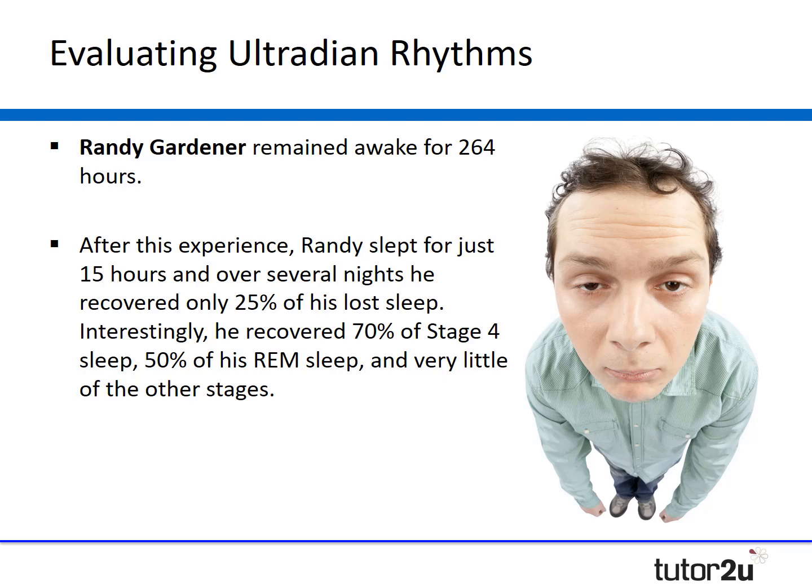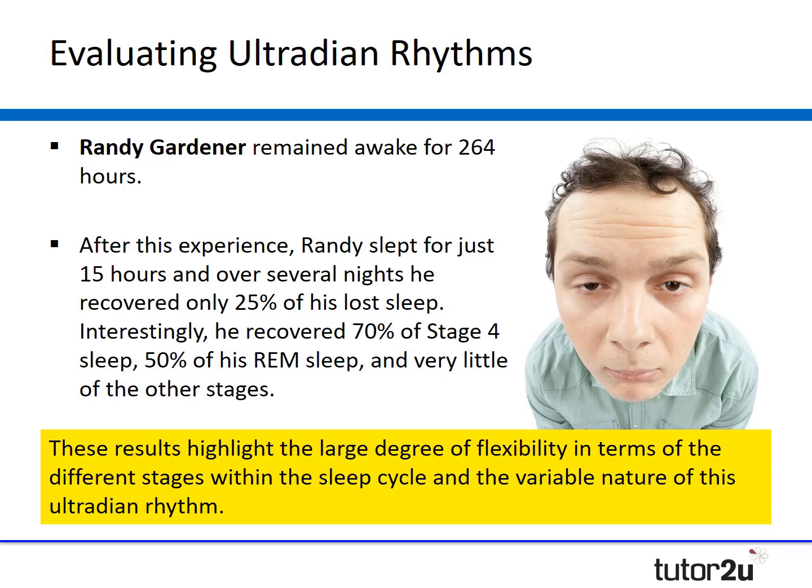In terms of evaluating ultradian rhythms, key research suggests they are more flexible than psychologists originally thought. There's an interesting case study of Randy Gardner, who remained awake for 264 hours. After this experience, he slept for 15 hours over several nights and recovered 25% of his lost sleep in total — of which he recovered 70% of stage 4 and 50% of stage 5 REM sleep, but very little of the other stages. This highlights a large degree of flexibility in the different stages within the ultradian rhythm and the variable nature of biological rhythms.